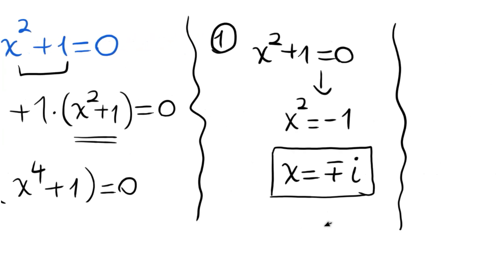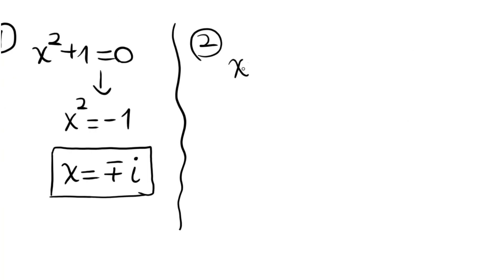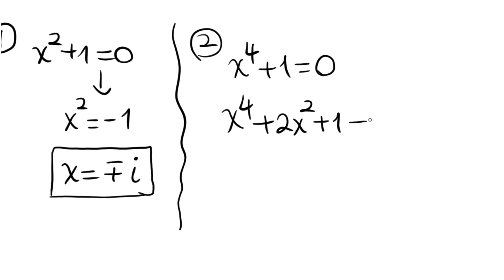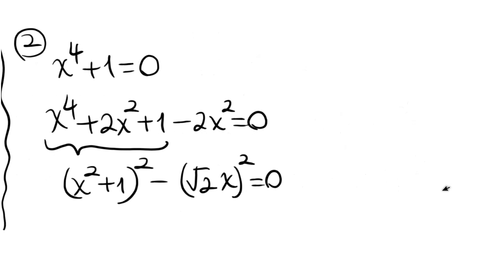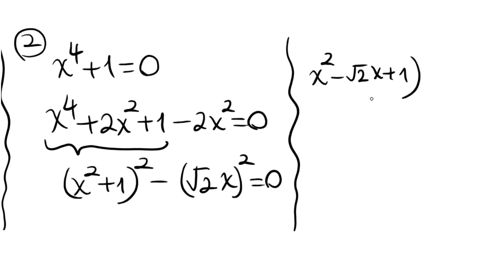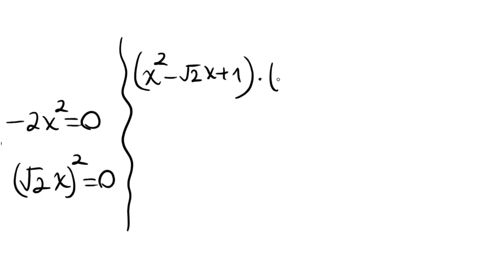The second part is a quartic: x to the power 4 plus 1 is equal to 0. To factor this, we add and subtract the 2x squared term to get a complete square. This gives x squared plus 1 all squared minus root 2 times x all squared — we have constructed a difference of two squares. This factors as x squared minus root 2 times x plus 1, times x squared plus root 2 times x plus 1, equal to 0.